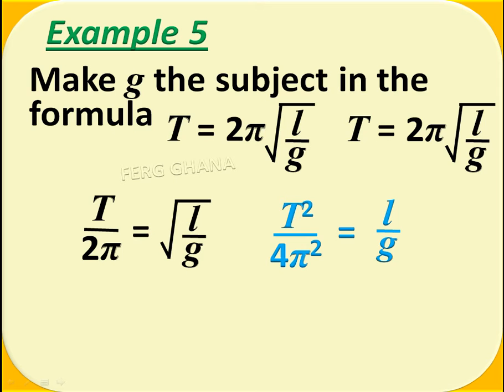We can now inverse the fractions here, where the numerators become denominators and the denominators become numerators. So we have 4 pi square over T square equals G over L.